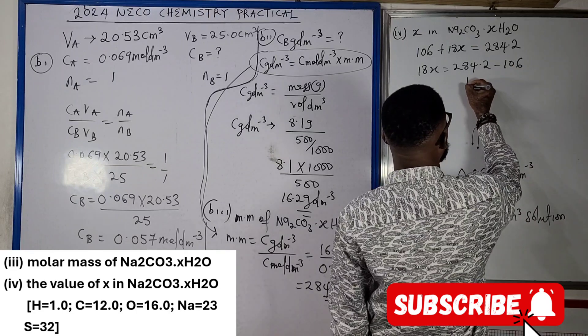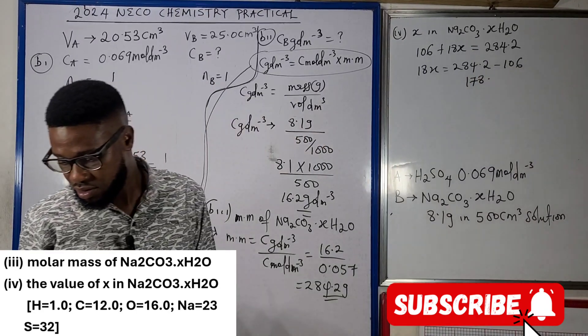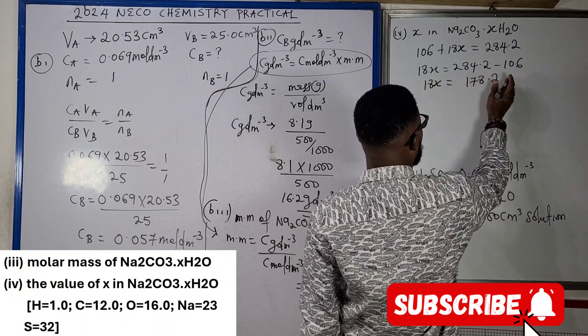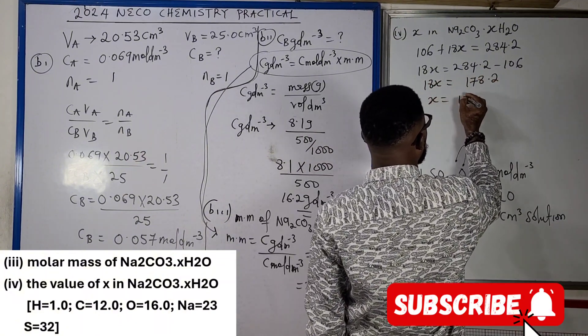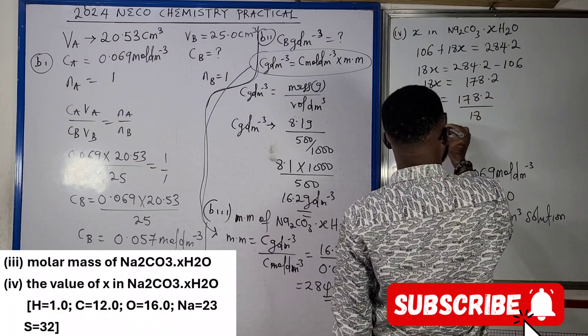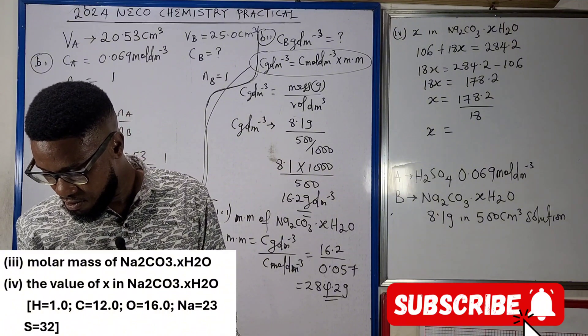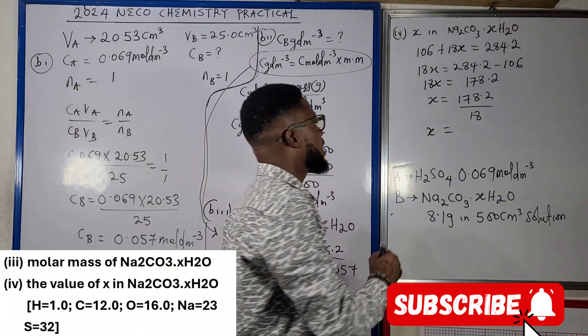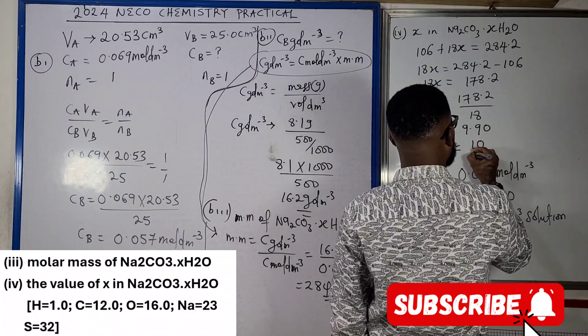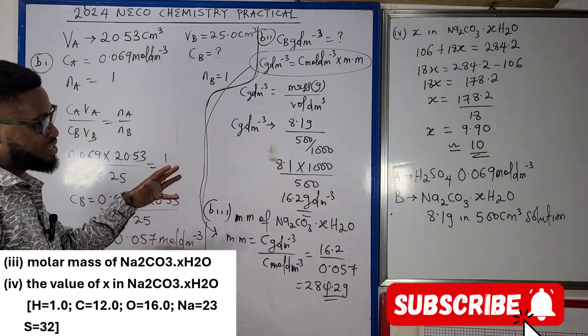So 18x equals to 178.2, so x equals to 178.2 divided by 18, x equals to 9.90. This is approximately 10, so what this is telling us is that our x is 10.